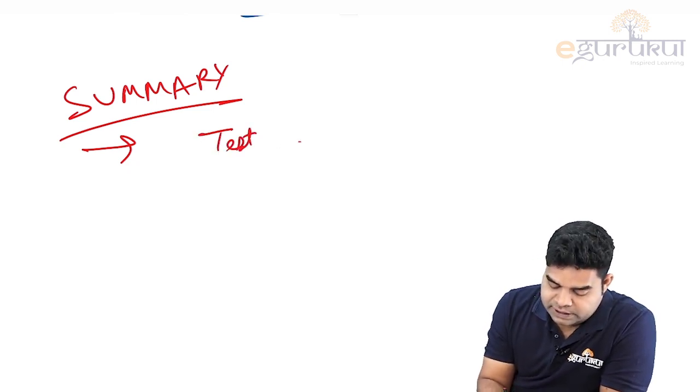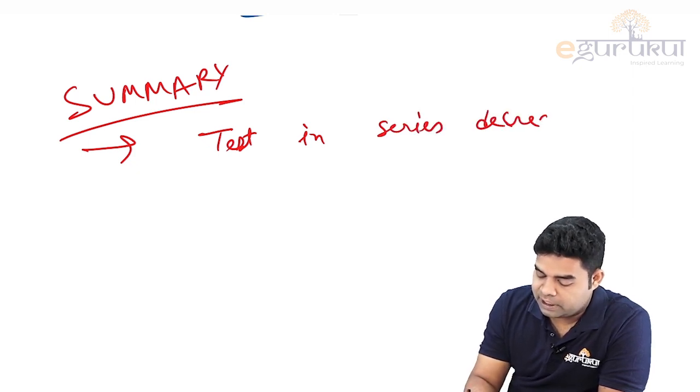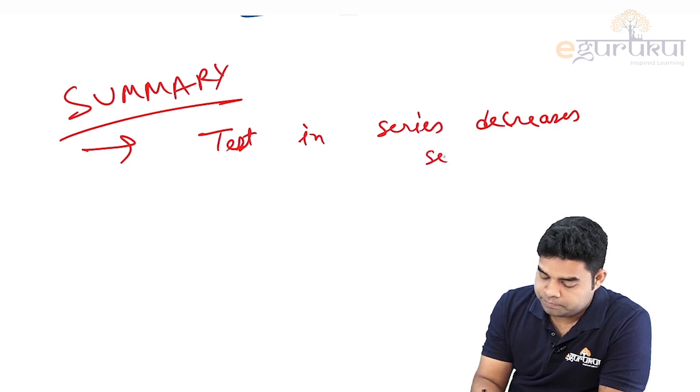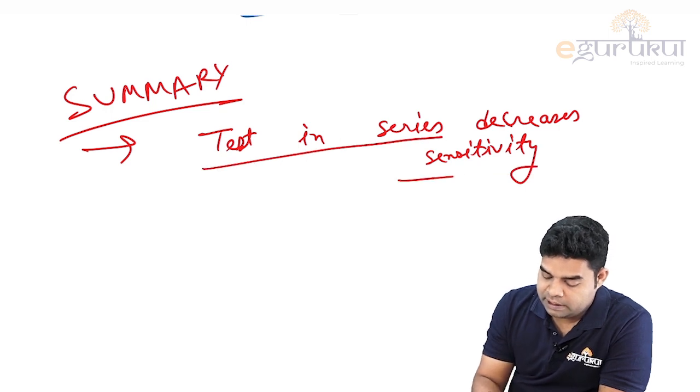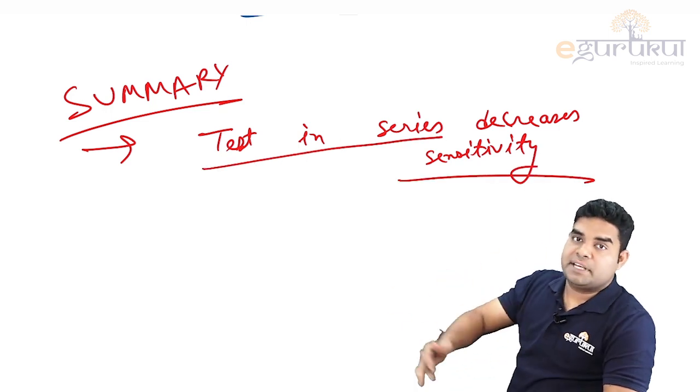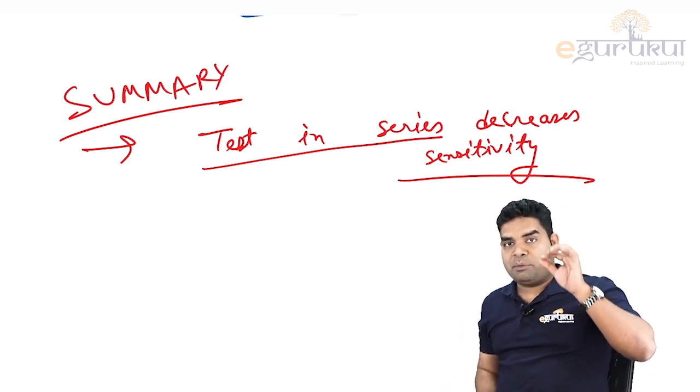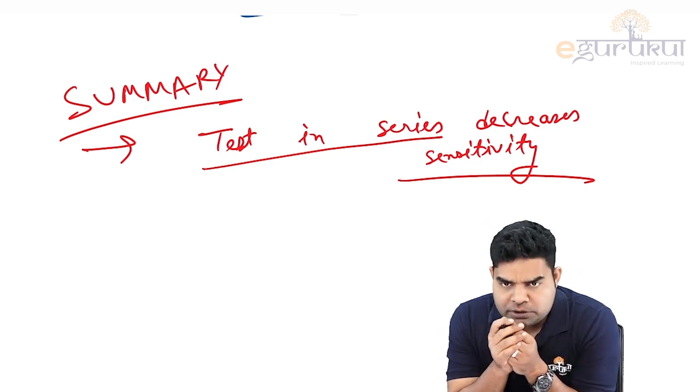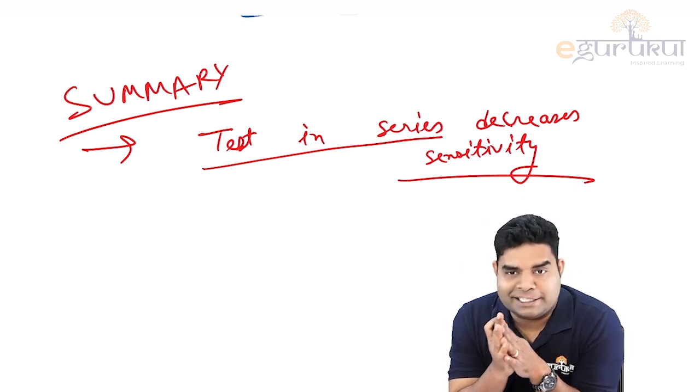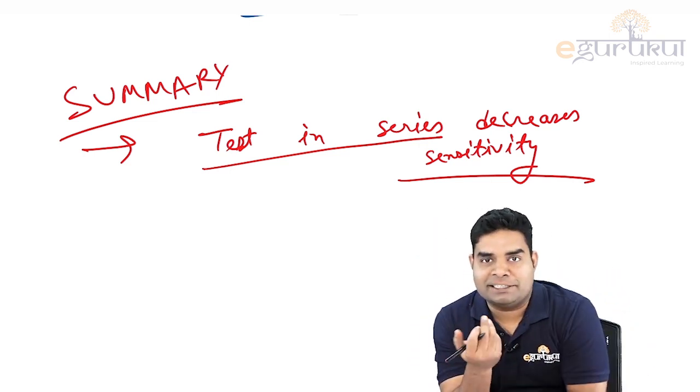Test in series decreases sensitivity. If you remember this line, then you will remember that test in parallel increases sensitivity, because that is opposite. And if you remember about sensitivity, you can answer the remaining three things. So that is all from this topic of test in series and test in parallel. I hope it will be useful to you to remember it from the conceptual side. Thank you very much for listening.